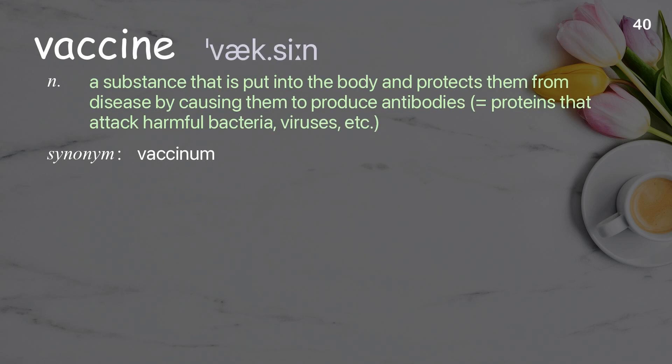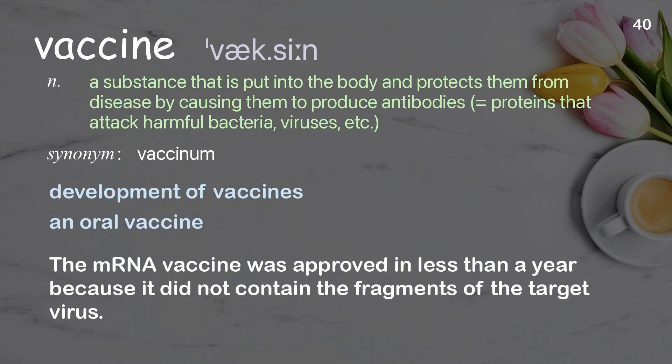Vaccine: a substance that is put into the body and protects them from disease by causing them to produce antibodies — proteins that attack harmful bacteria, viruses, etc. Examples: development of vaccines, an oral vaccine. The mRNA vaccine was approved in less than a year because it did not contain the fragments of the target virus.